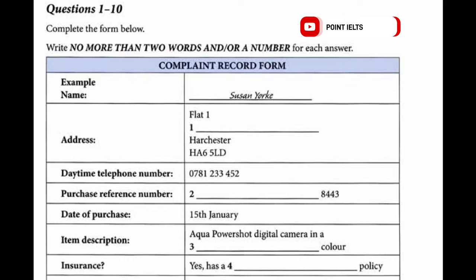Yes, it's Flat 1, 25 Alpine Avenue, that's A-L-P-I-N-E Avenue, Harchester. The postcode is H-A-6-5-L-D.